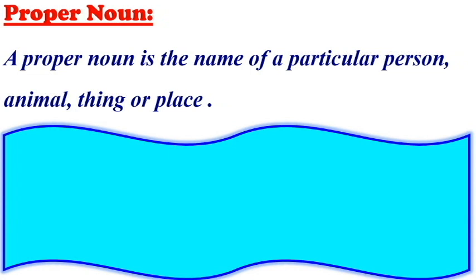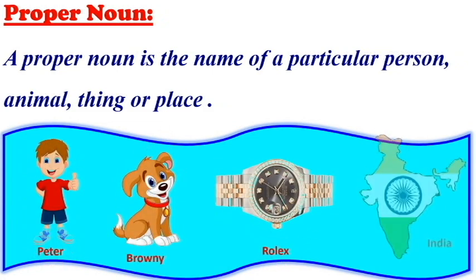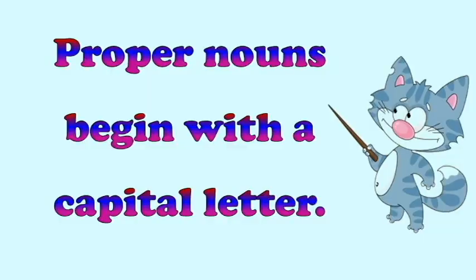A proper noun is a name of a particular person, animal, thing or place. Proper nouns begin with a capital letter.